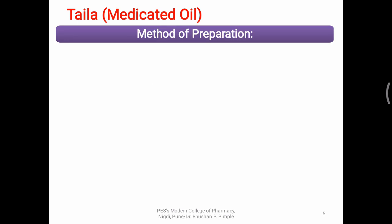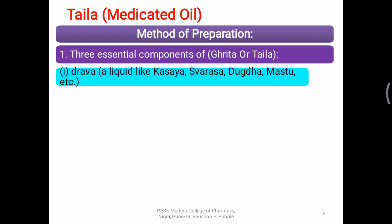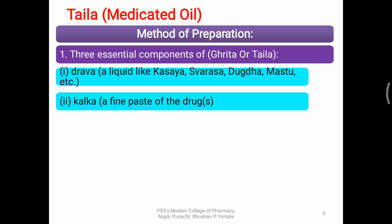The method of preparation of medicated oil involves three essential components. The first is called Drava, meaning the aqueous paste. This aqueous paste can be Kasaya, that is a decoction of plant products; Svarasa, that is juices of fruits, leaves, or entire plants; Dugdha, meaning milk; and Takra, which is similar to buttermilk. Buttermilk can also be one of the Drava. The second component is Kalka — the active ingredient — which consists of crude drugs converted into fine powder and prepared as a smooth paste.